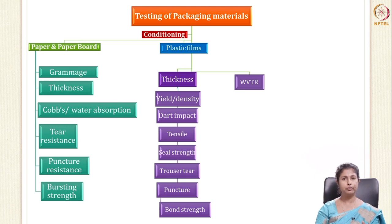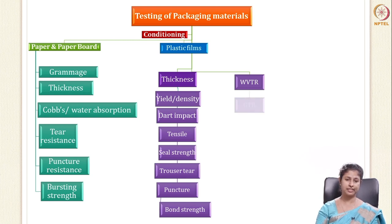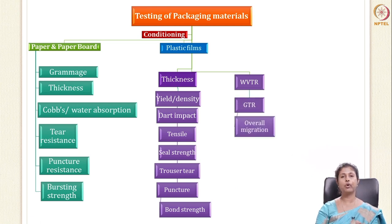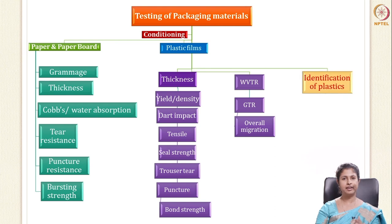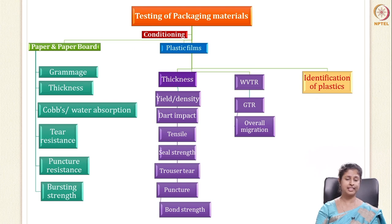Other than these mechanical tests done on plastic films, we also test for barrier properties, including WVTR — water vapor transmission rate — GTR — gas transmission rate — and overall migration. In the last part of testing we'll go into how to identify different plastics, as there are many types in the market.